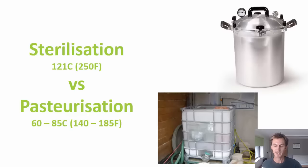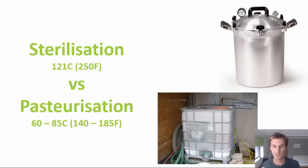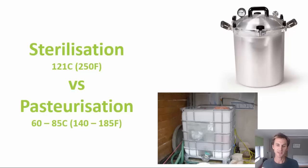That brings us to the topic of sterilization versus pasteurization — I'm going to make a separate video about this. Very basically, there's a choice to be made as to whether you're going to sterilize or pasteurize your substrate. Sterilization is a more thorough process that happens at a higher temperature of around about 121 degrees Celsius — that's 250 Fahrenheit. At that temperature you're going to kill all living organisms on the substrate completely, so afterwards you've got substrate with no competitors whatsoever. That enables you to add higher levels of nitrogen and get higher yields. The downsides are that you need additional equipment, you need to learn sterile processes and aseptic techniques, and it tends to be more costly and time consuming when working with larger amounts of substrate.